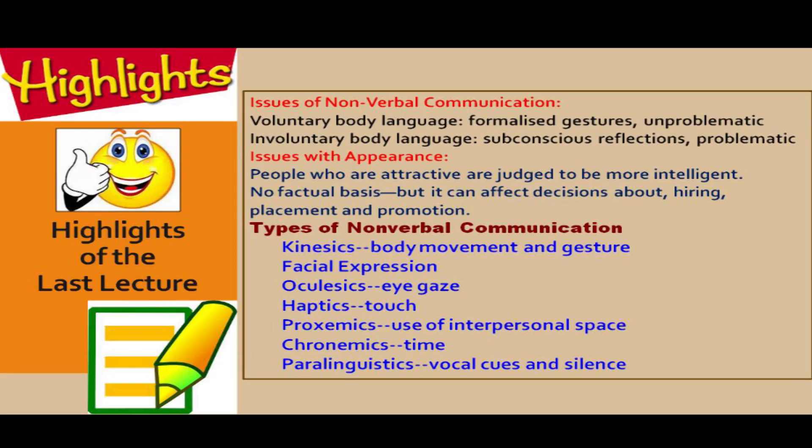I talked about the types of nonverbal communication, particularly seven types. Kinesics refers to body movement and gesture in general. Facial expression is something we talked about, and we looked at the six basic facial expressions. Oculistics is about eye gaze — I talked about dilation as well as contraction, and how people can manipulate your interest to sell you something at a very high price just by looking at your eye gaze behaviour.